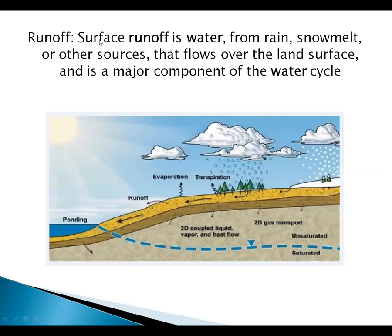The next step is runoff. Surface runoff is water from rain, snow melt or other sources that flows over the land surface, and is a major component of the water cycle. All the land water runs off and flows towards the ocean or into rivers. Some water soaks into the ground through small spaces between particles of soil and cracks in rock.